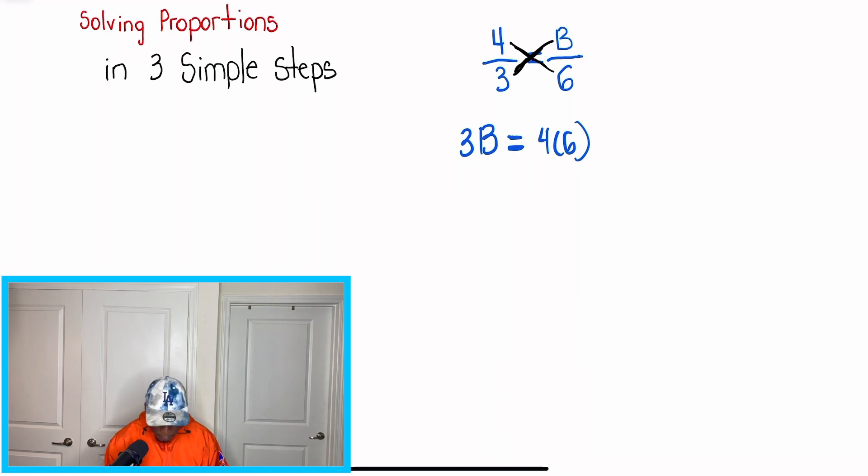If you look here, this is basically like a one-step, two-step equation. We know that 3 times B is going to give us the answer of 4 times 6. So we start working this problem out, and now we have 3 times B is equal to 24. And then we know, if you want to solve for B, the last thing now we have to do is to solve the equation.